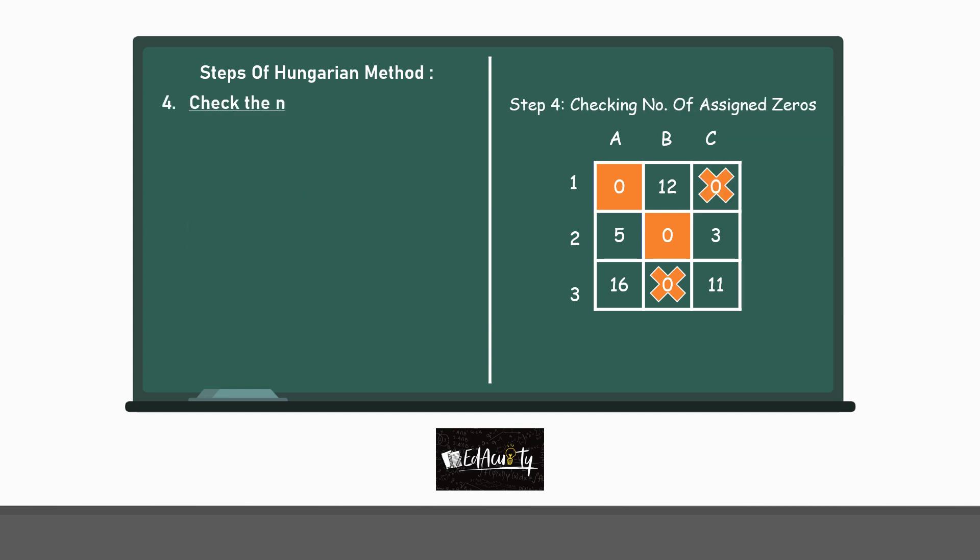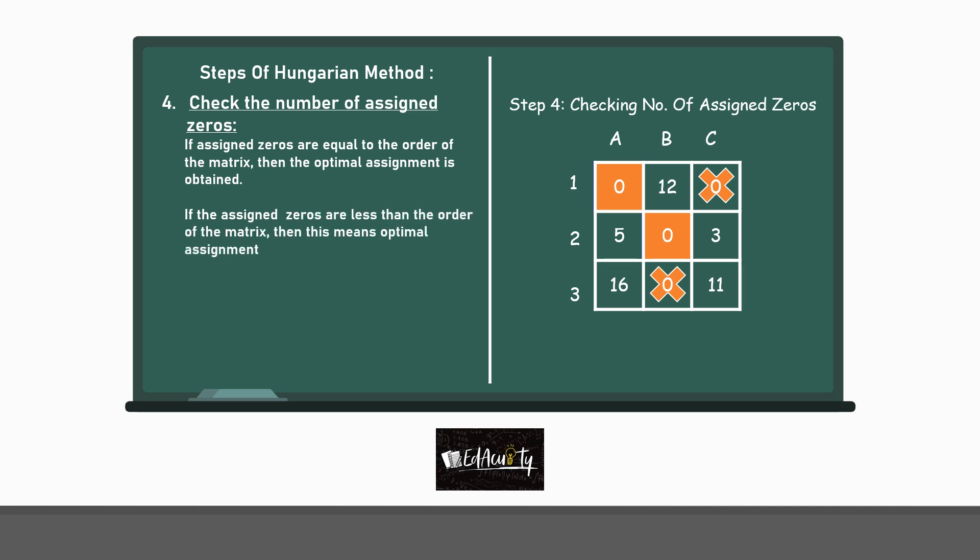Step 4 is checking the number of assigned 0s. That is, if assigned 0s are equal to the order of the matrix, then the optimal assignment is obtained. If the assigned 0s are less than the order of the matrix, then this means optimal assignment is not reached. You can see that the number of assigned 0s is 2, whereas the order of the matrix is 3. This means that the optimal assignment is not yet reached. And in order to get that, we need to apply the tick marking method.